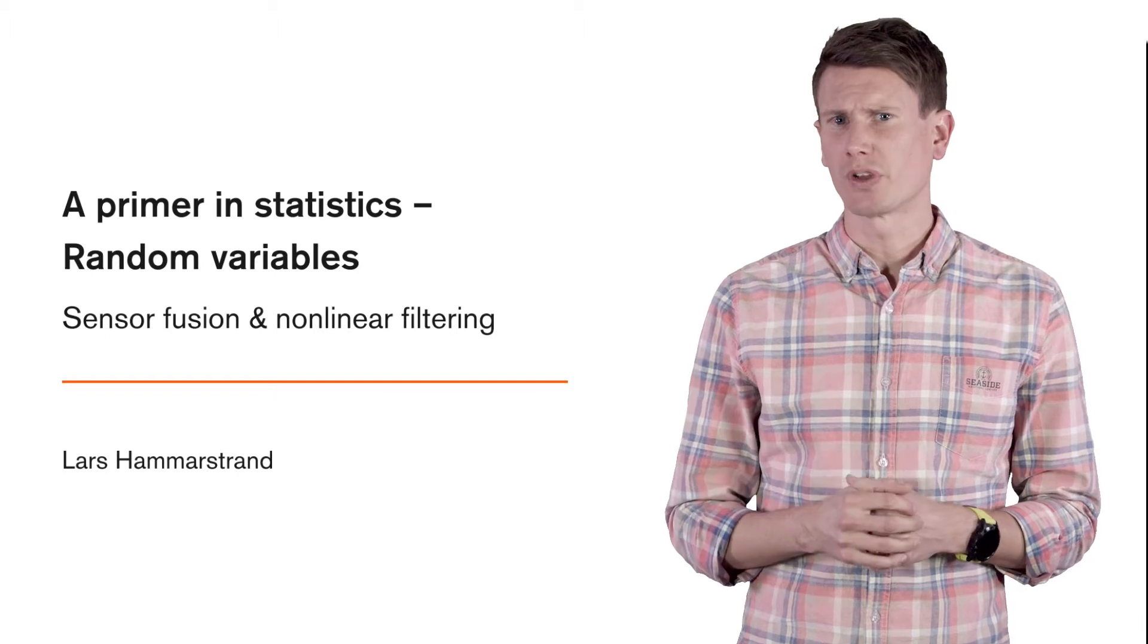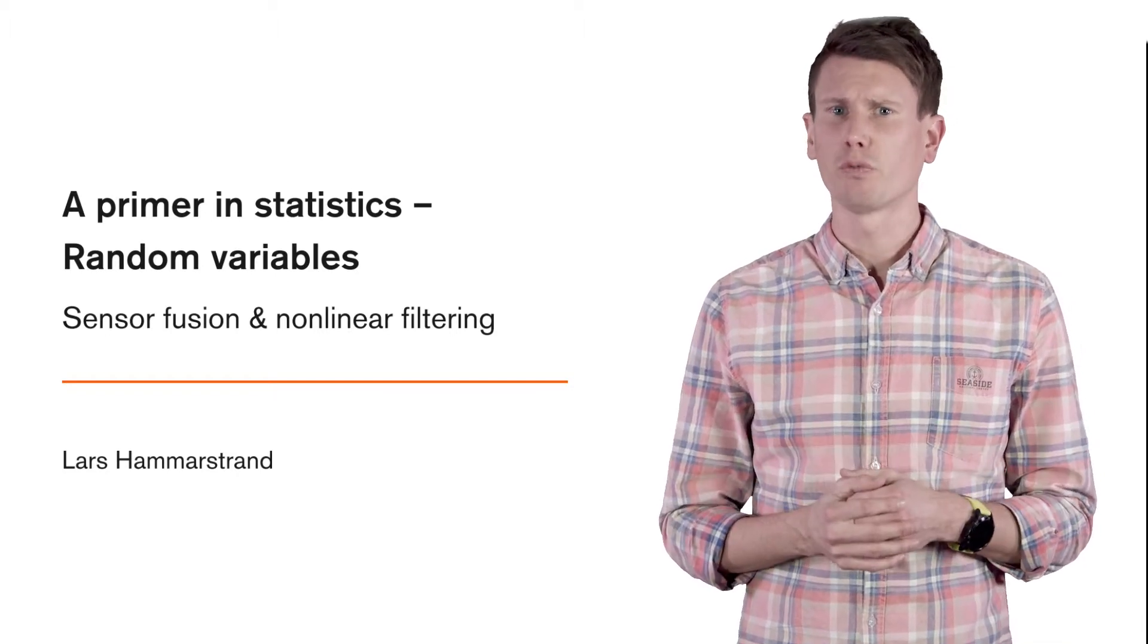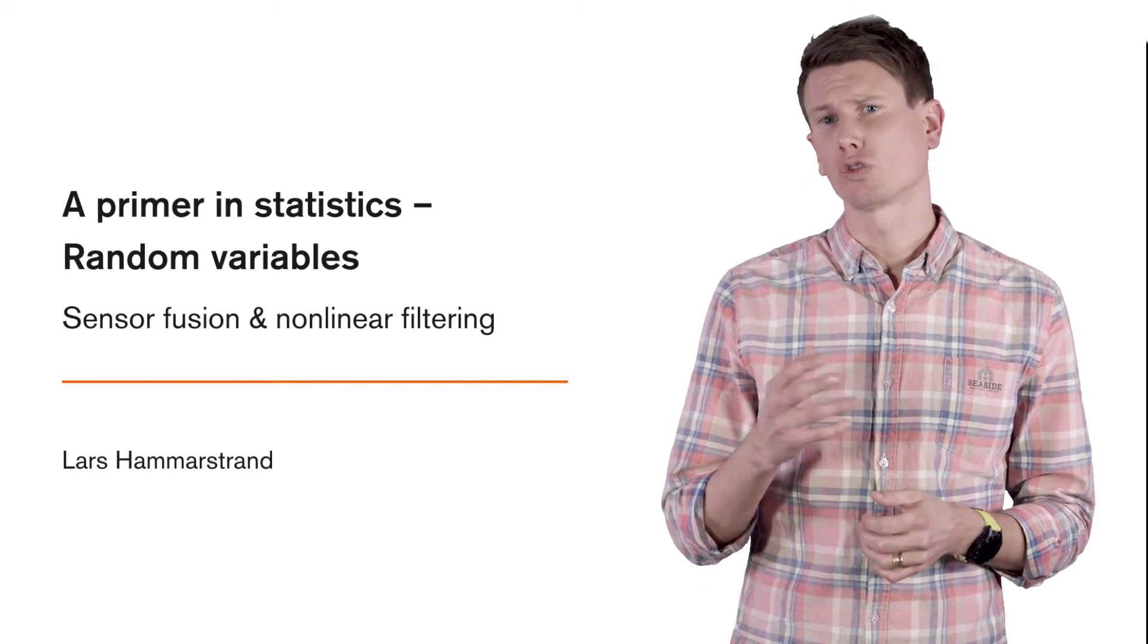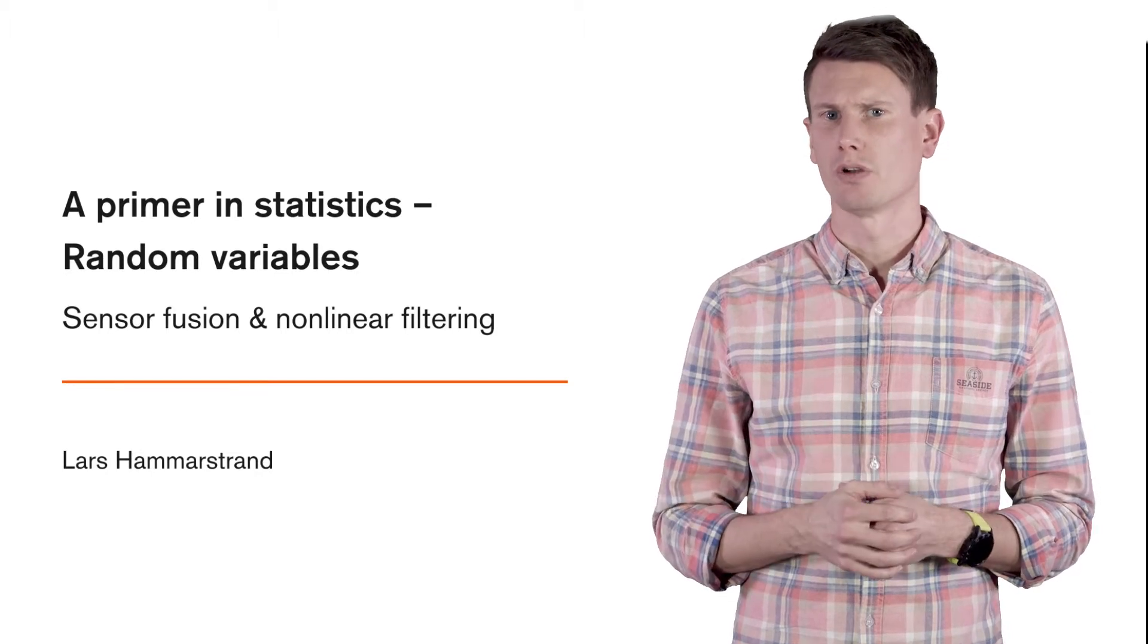To describe our random variables, we use a so-called probability mass function for discrete-valued random variables, and a so-called probability density function for continuous-valued random variables.